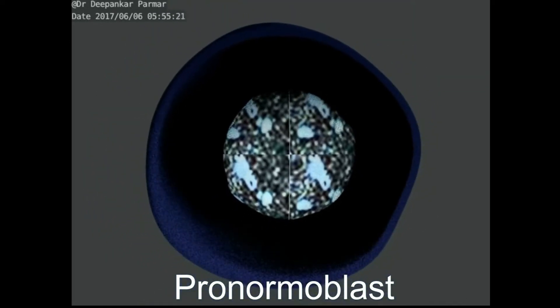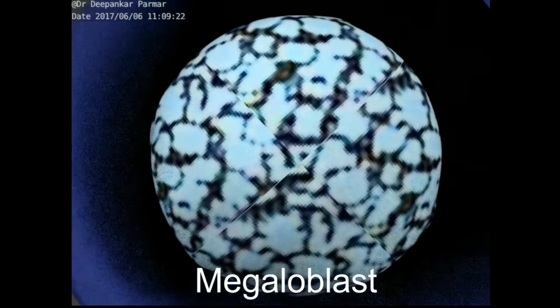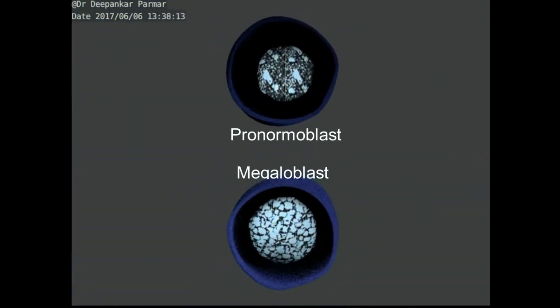Now, again, you see the normal cell pronormoblast stage showing normal size mature nucleus followed by a megaloblast with sieve-like chromatin.